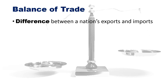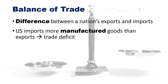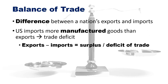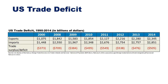Balance of trade is the difference between a nation's exports and imports. If the US imports more goods from other nations than it exports, we have a trade deficit. The formula involves exports minus imports to determine a surplus or deficit. The US trade deficit is often discussed; the textbook reproduces census data showing the trade deficit against China between 2000 and 2014, measured in billions of dollars.